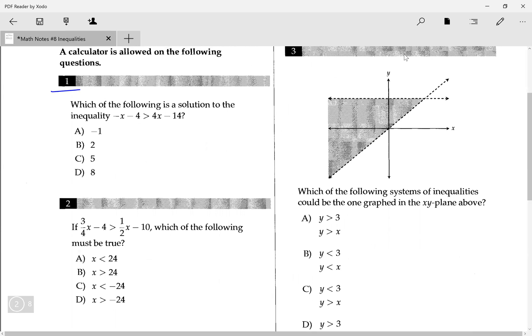First, I'm going to do number one, which of the following is a solution to inequality: negative x minus four is greater than four x minus 14. In this case, just solve it like you normally would. Add x on this side, add 14 on this side. That gives me 10 is greater than 5x. That gives me x is less than 2. Because I flipped this over, I also flipped over the sign.